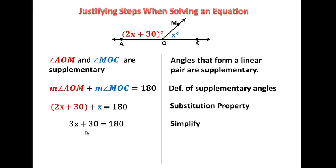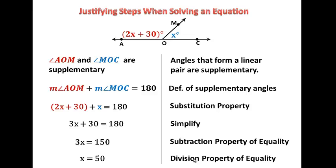And now again, I'm trying to get that X by itself. So I would subtract 30 from both sides, and that would leave me with 150, and that is the subtraction property of equality. And then, of course, the last step is we would divide both sides by 3, and that would be the division property of equality.